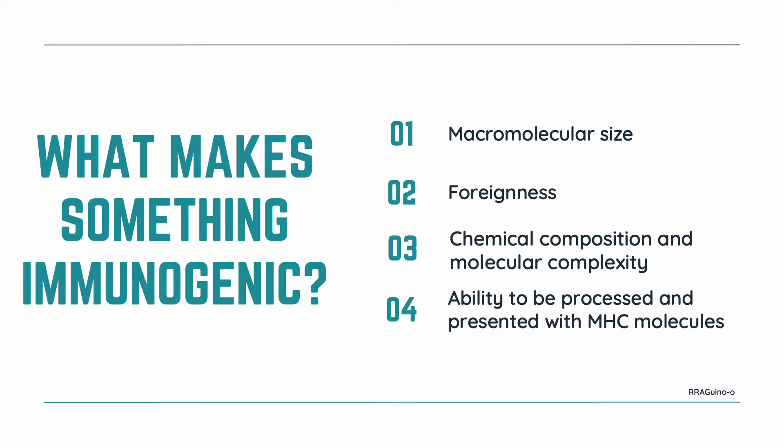What makes something immunogenic? There are a few factors that contribute to an antigen's immunogenicity. First is its macromolecular size. For a substance to be recognized by the immune system, it has to be at least 10,000 Daltons — Daltons being the unit of measure for molecular weight. The most active immunogens are typically over 100,000 Daltons. Next is the foreignness of the antigen to the host. Typically, the more distant the source of the antigen is from the host, the more immunogenic it is.